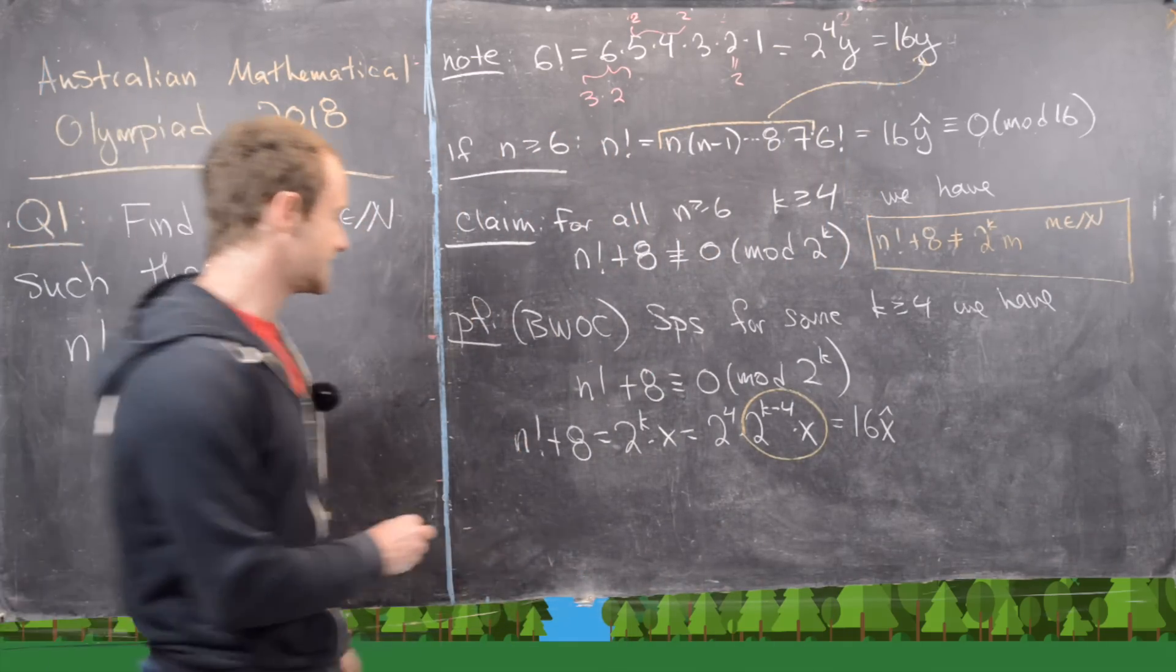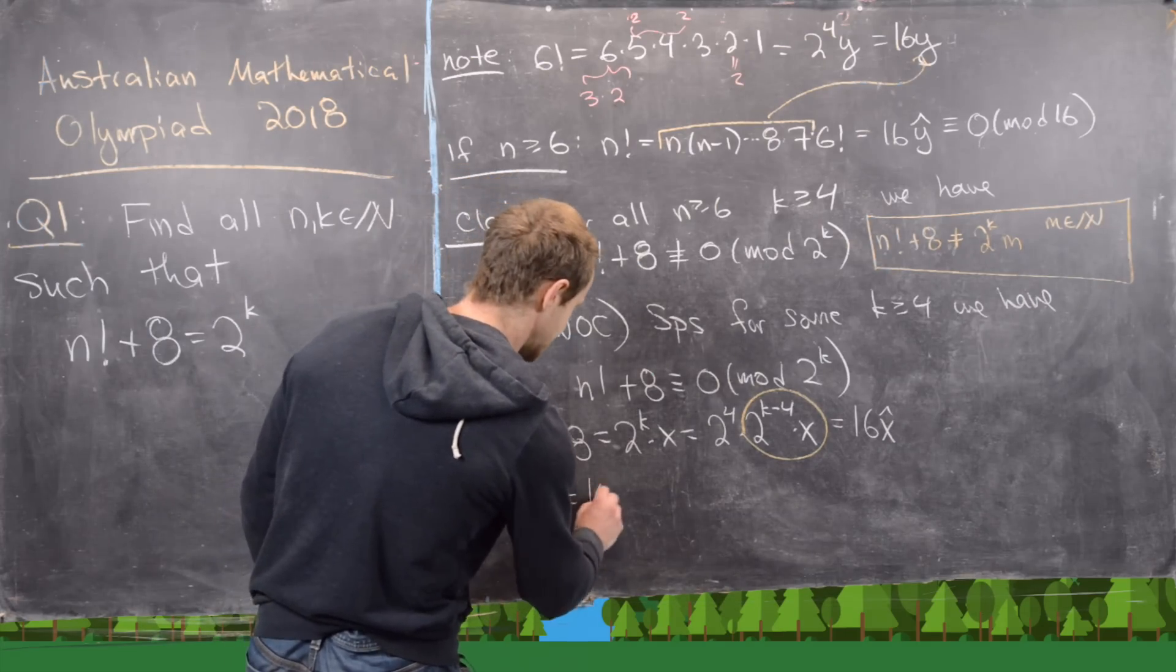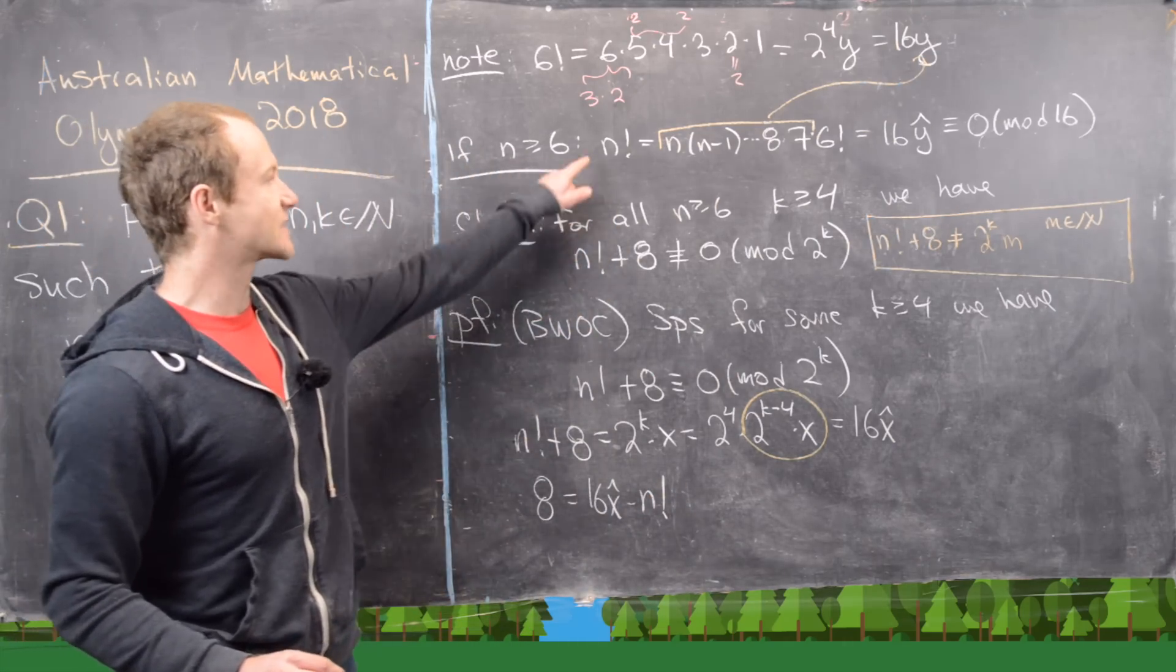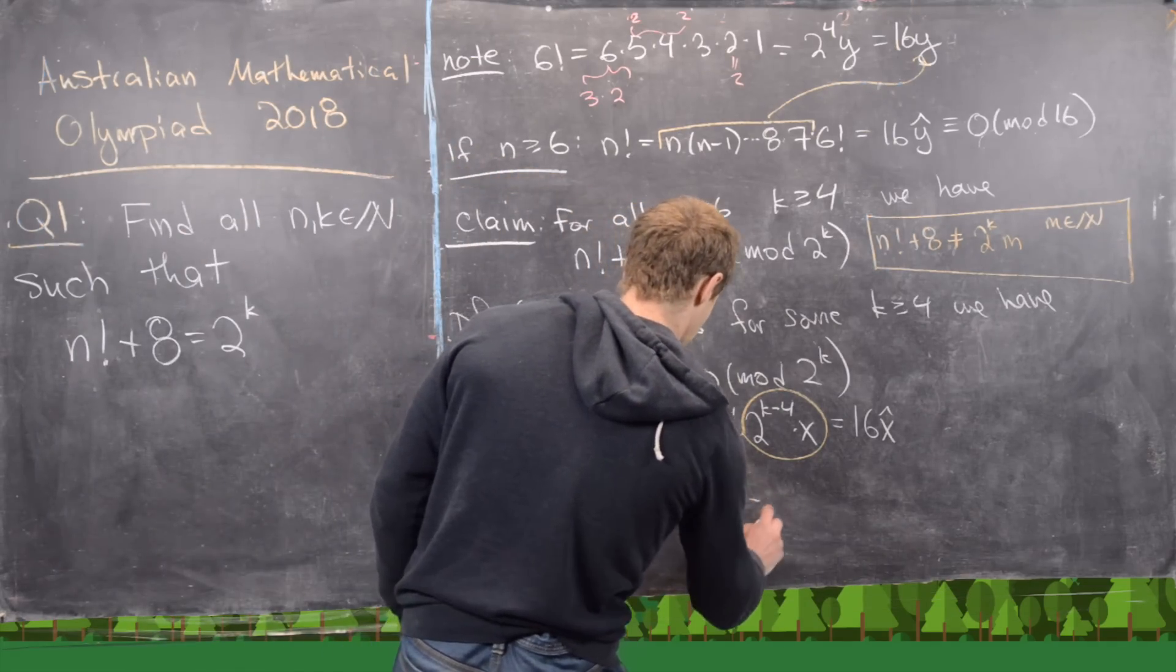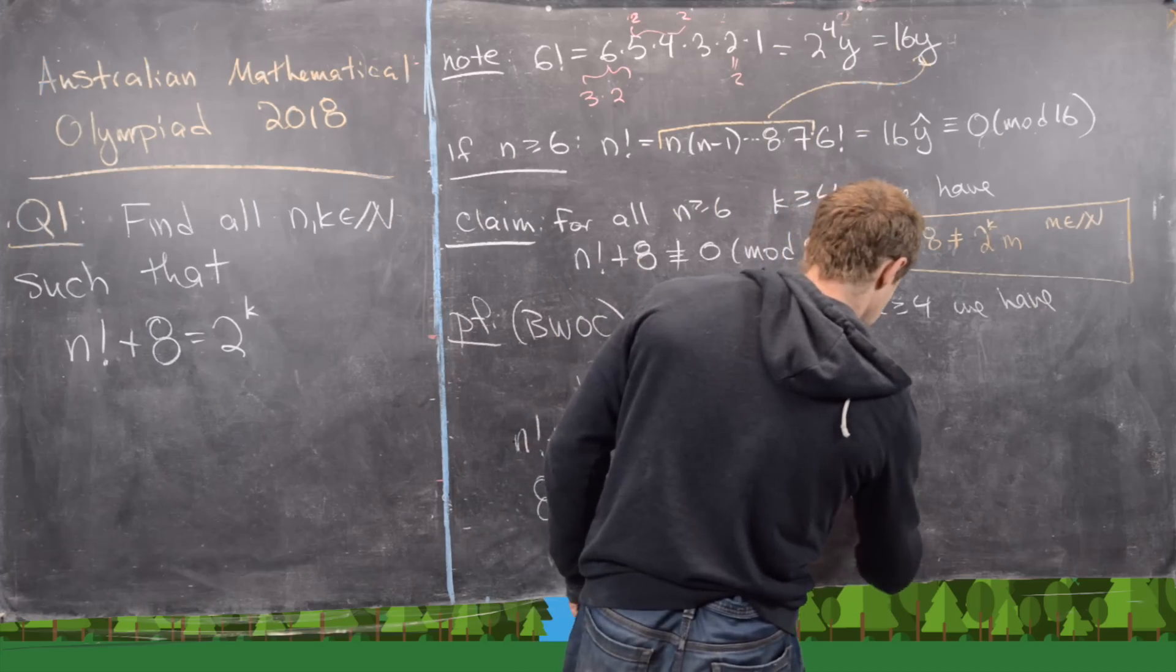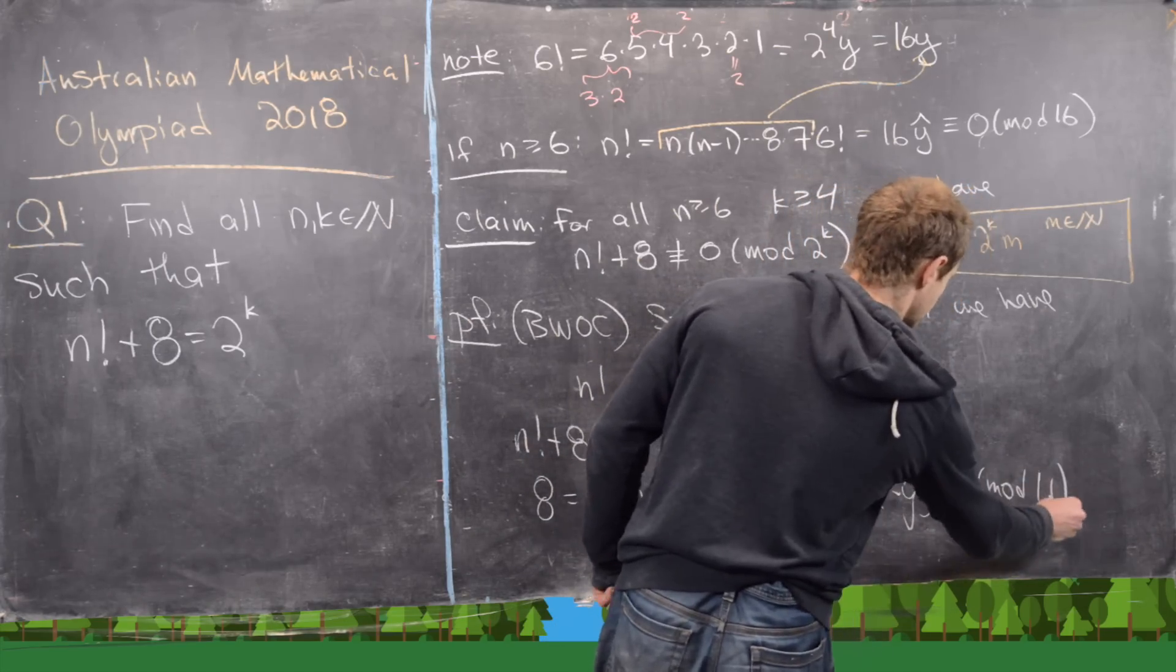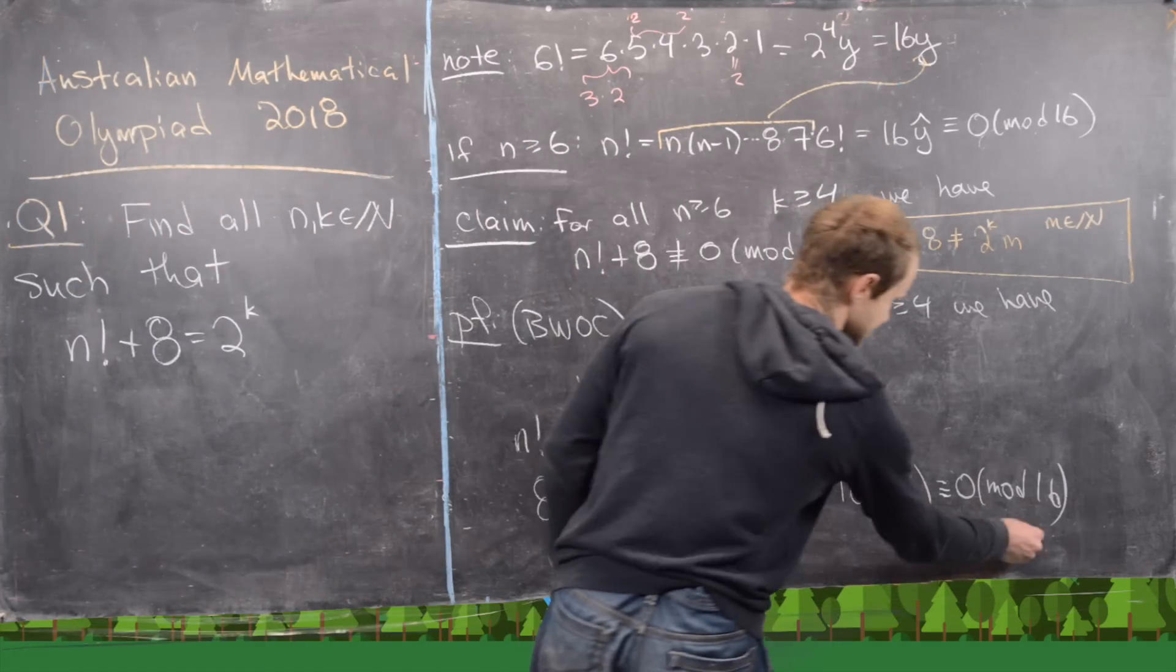Now, the next thing that we can do is notice that we can write 8 is equal to 16 x hat minus n factorial. But we already showed that n factorial was a multiple of 16. So this is 16 x hat minus 16 y hat. But that is 16 times x hat minus y hat. But that is congruent to 0 mod 16. But it's ridiculous to say that 8 is a multiple of 16. So that gives us our contradiction.